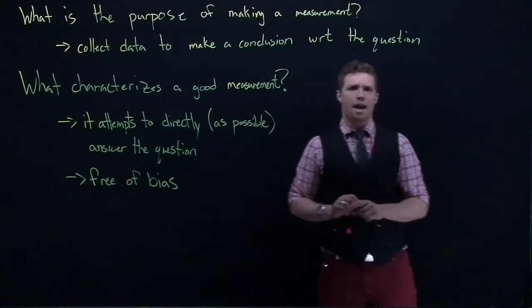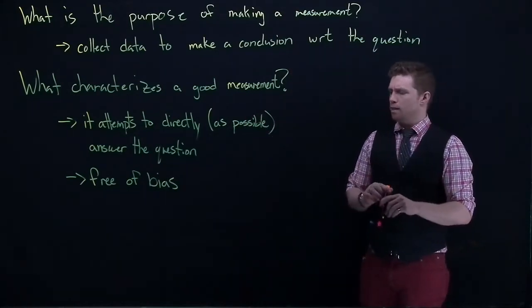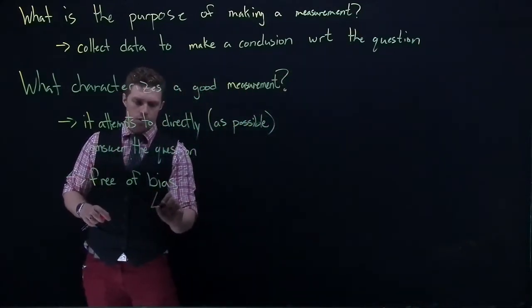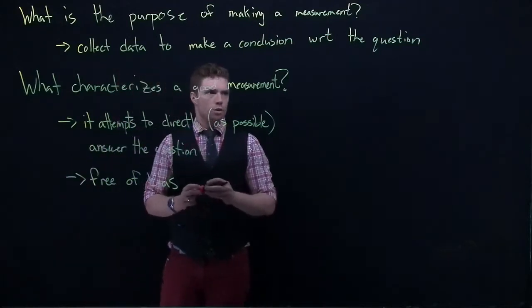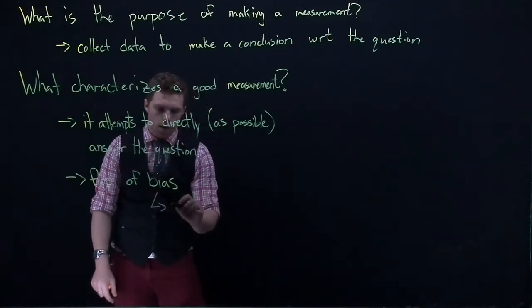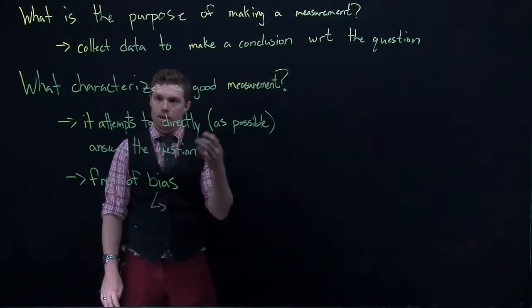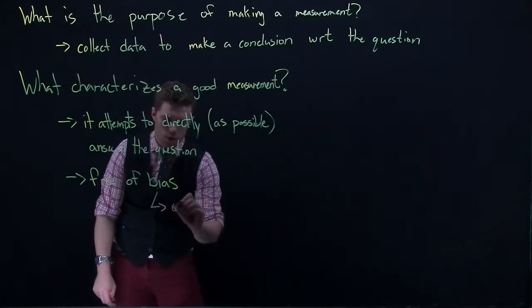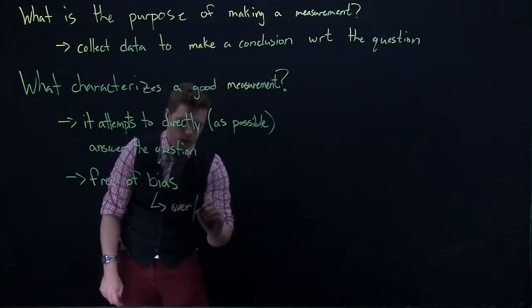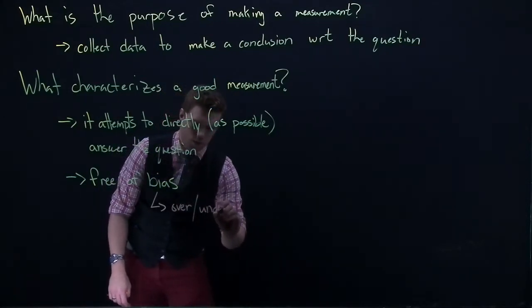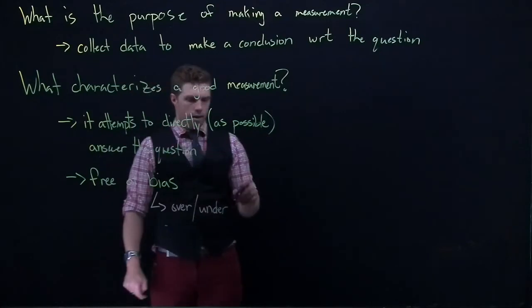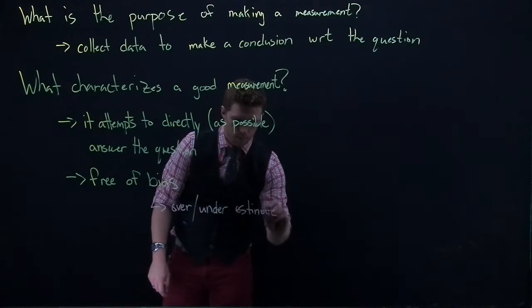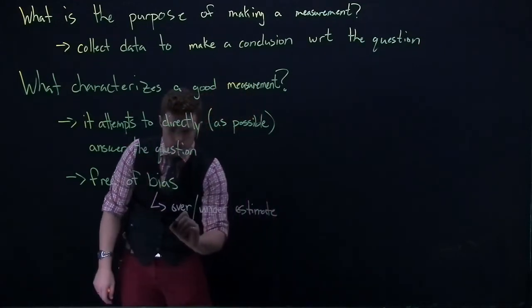This next part is free of bias. And we need to probably define what bias is. And bias is just... So the bias is when we take our sample and our measurements, the answers will over slash under, either or, underestimate the population parameter.